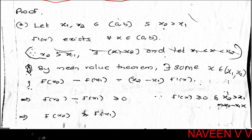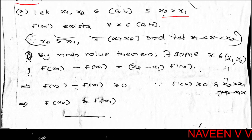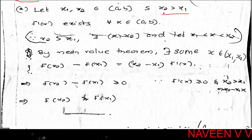To show f is monotonically increasing on open interval (a, b), take any x1 < x2 in the interval. We need to show f(x1) ≤ f(x2). Since f is differentiable on open interval (a, b), it is continuous on [x1, x2] and differentiable on (x1, x2).